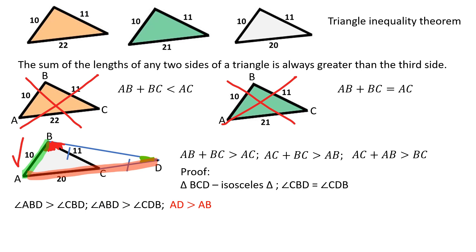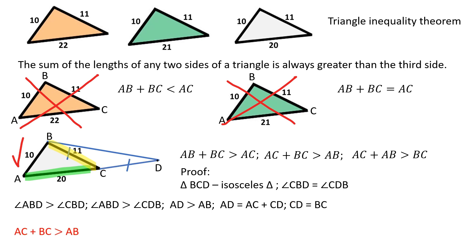AD is greater than AB because the larger angle has a larger opposite side. And since AD is equal to the sum of AC and CD, and CD is equal to BC, AC plus BC is greater than AB, which proves our original statement.